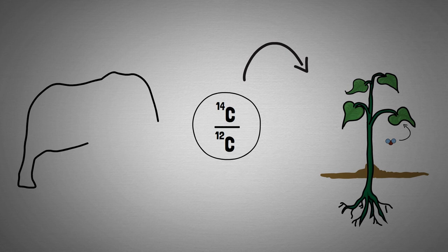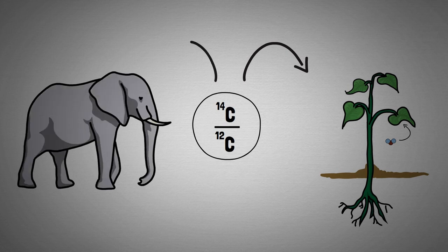Similarly, any animal that eats plants also has this ratio. But once the plant dies, or the animal dies, no new carbon is entering their system. The total number of carbon-14 atoms in their bodies is frozen at the time of their deaths. And slowly over time, this carbon-14 decays back into nitrogen-14 at a predictable rate.